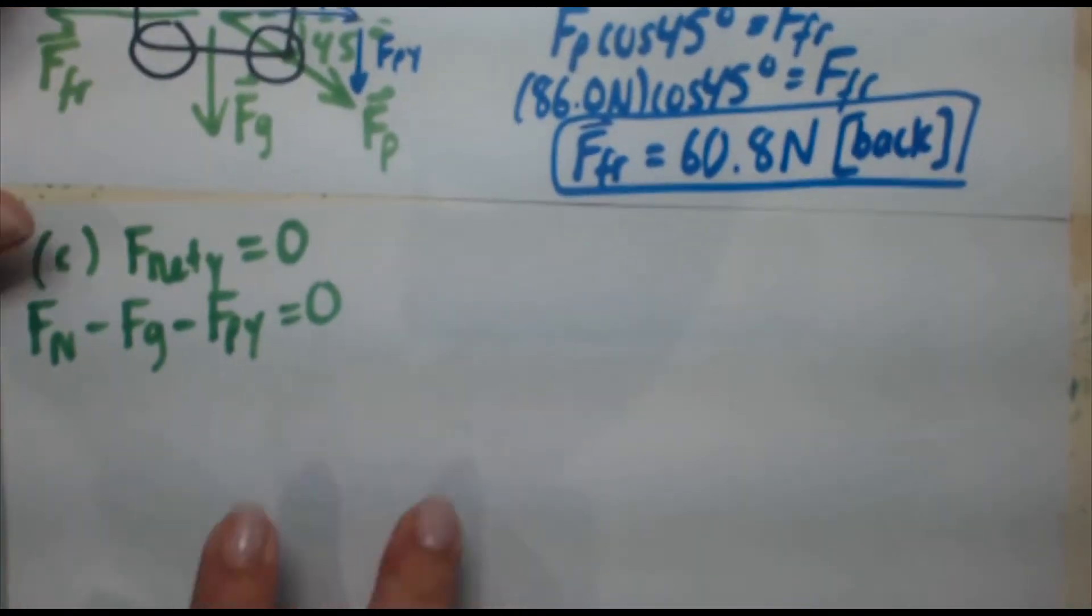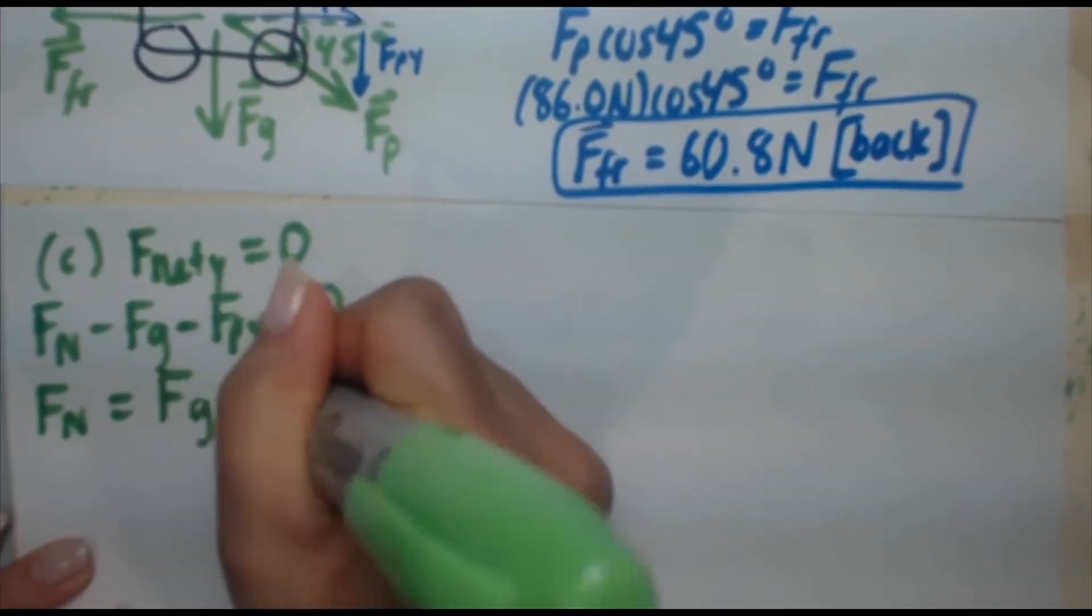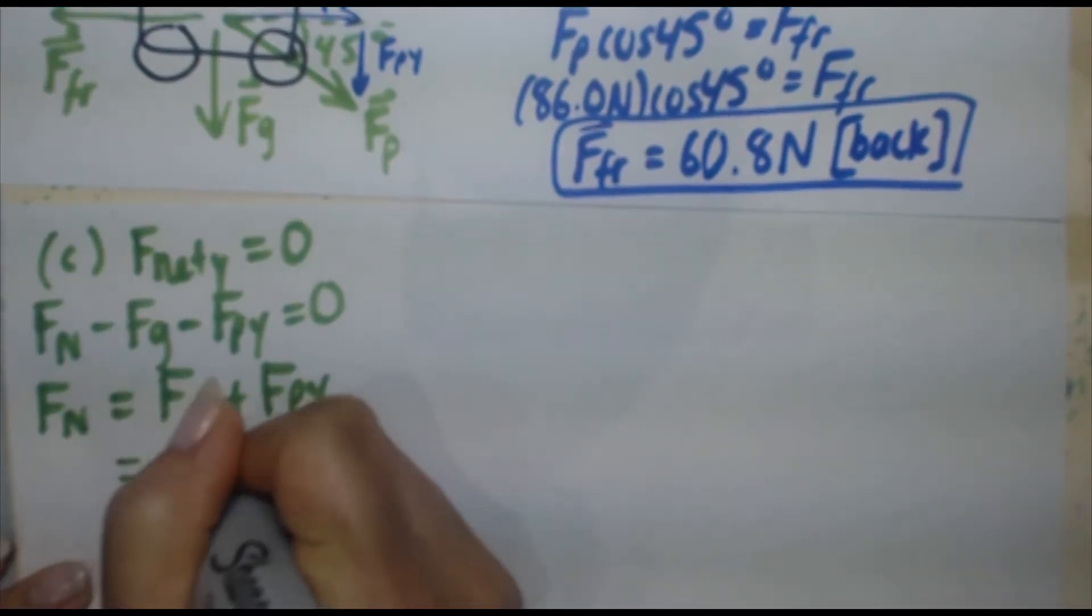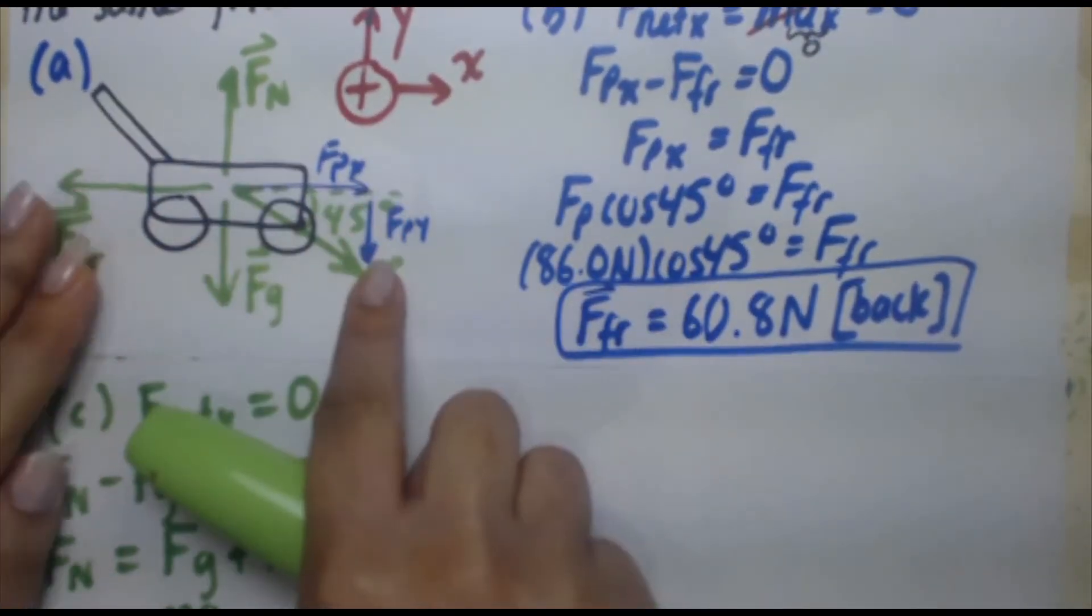Fn equals fg plus fpy. fg equals mg. Now fpy, you do the same kind of idea. Take a look at that right angle triangle. fpy is opposite to this angle. Opposite implies sine.